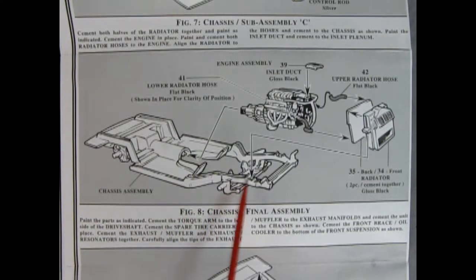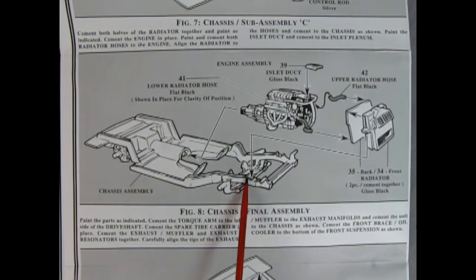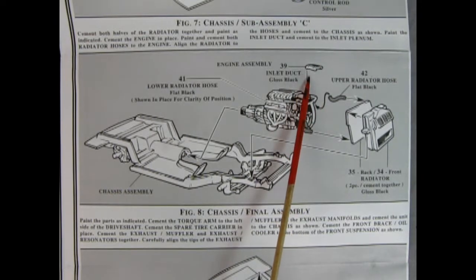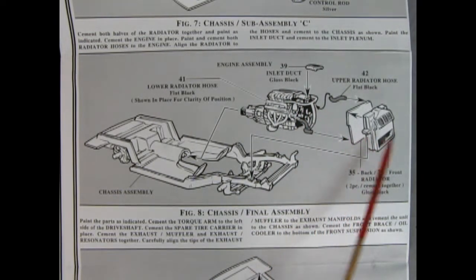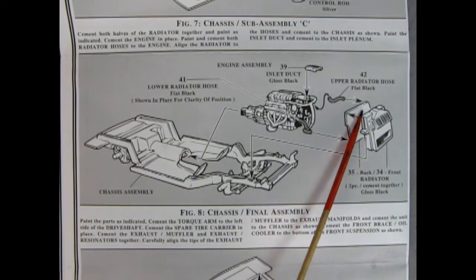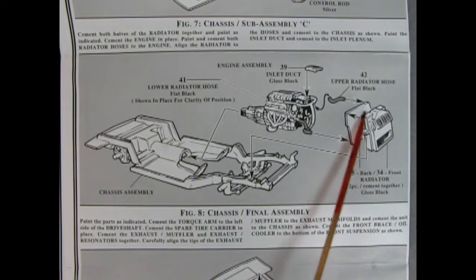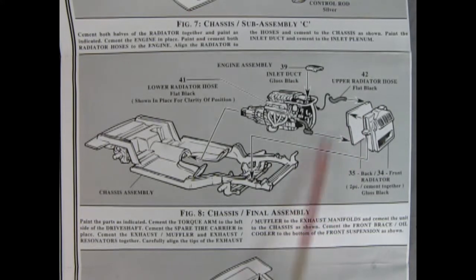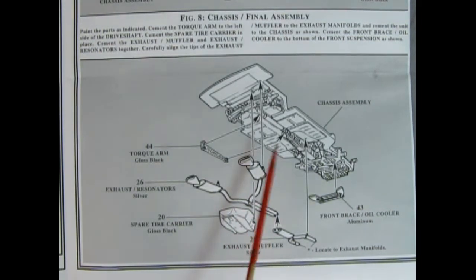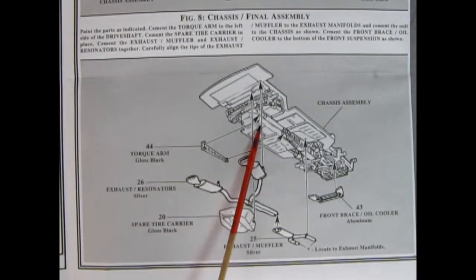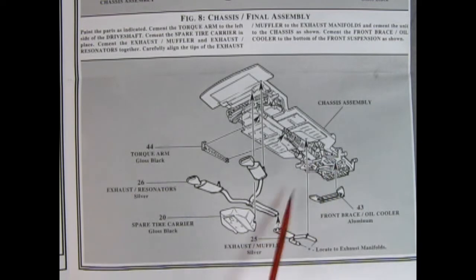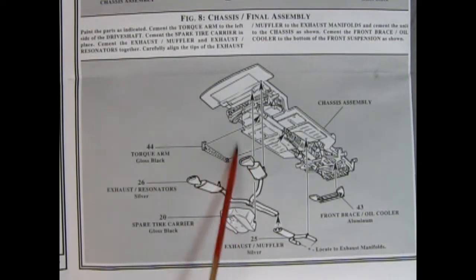And here we have our chassis assembly with our engine being glued in place here at the front and the back of the transmission hooking up to our drive shaft. Then we've got a little inlet duct, and here on our radiator we have the actual intake molded in place, and then the back of the radiator gets glued in. And we've got our upper radiator hose and our lower radiator hose being put into the two holes at the top and bottom of the back of the radiator. Here we've got our muffler and exhaust system being glued together and pushed up underneath. We've got a torque arm which glues on the side of the drive shaft, and then a front brace with the oil cooler which gets glued up here, and then finally our spare tire carrier gets hooked onto the back.